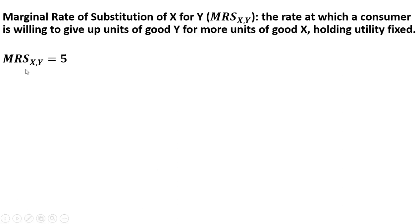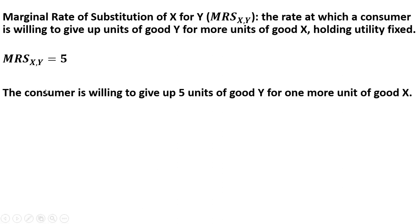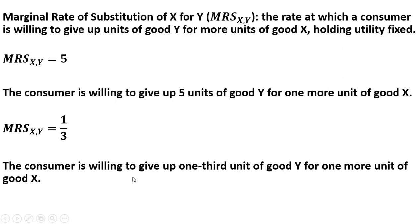If the marginal rate of substitution of good x for good y is 5, it means the consumer is willing to give up 5 units of good y for one more unit of good x, holding utility constant — so we're moving along an indifference curve where utility doesn't change. Another example: if the marginal rate of substitution of x for y is one-third, the consumer is willing to give up one-third unit of good y for one more unit of good x, holding utility fixed.